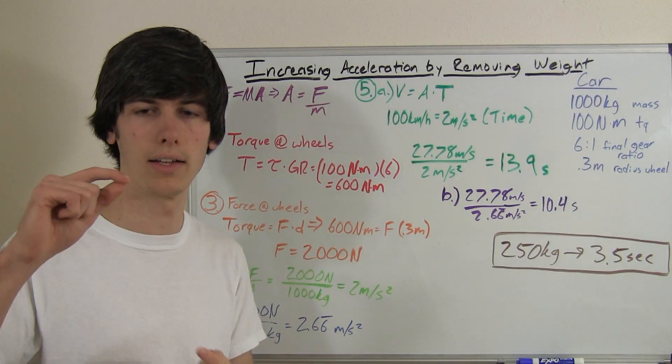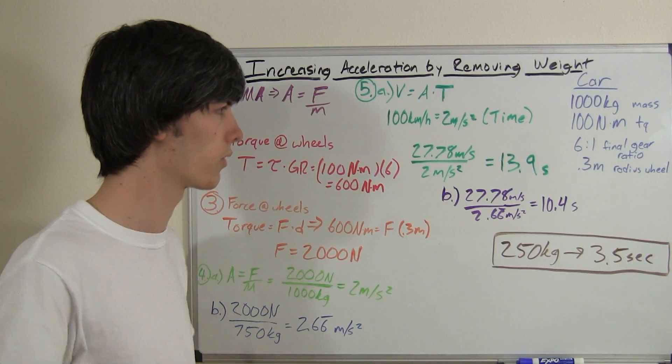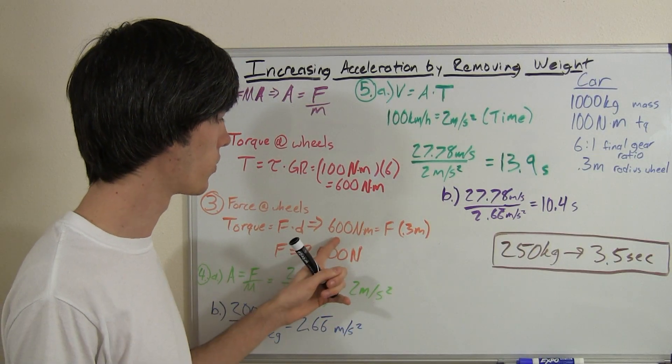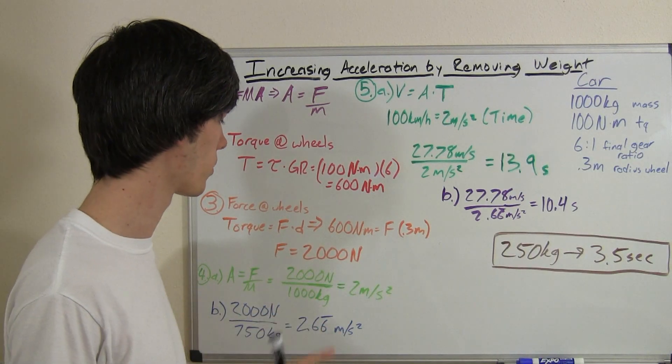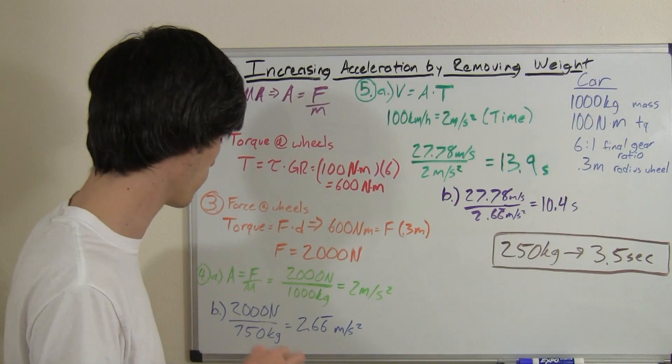The distance is going to be the distance from the center of the tire to where the tire is touching the ground, so the radius of the tire, 0.3 meters. So 600 newton meters divided by 0.3 gives us a 2,000 newton force that's going to be applied to those wheels.